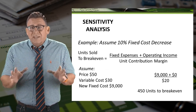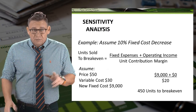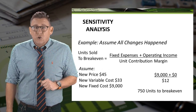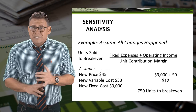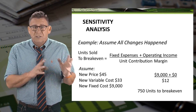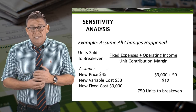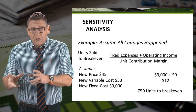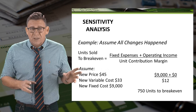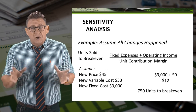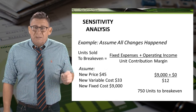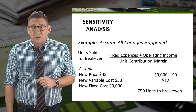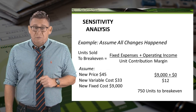Alright, what will breakeven be if all three things happen? Don't worry, the steps are just the same. We need to calculate a new contribution margin. Price is decreasing 10%, dropping from $50 to $45. Variable cost is increasing from $30 to $33, so our unit contribution margin is now $12. Finally, fixed costs decrease from $10,000 to $9,000. When we factor all three changes, we determine that breakeven increases to 750 units sold, which is a 50% increase from where we started. Clearly, these changes should be avoided if possible.